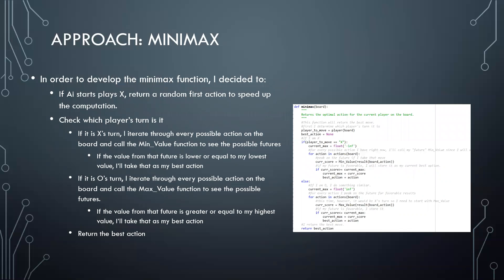And finally, minimax. If the AI is starting with X, I return a random first action to speed up the computation because it doesn't matter where I play at first. And otherwise, I check which player's turn is it. If it's X, I go through every possible action on the board calling the minValue function because I will simulate a play each time and it would mean it's now O's turn.